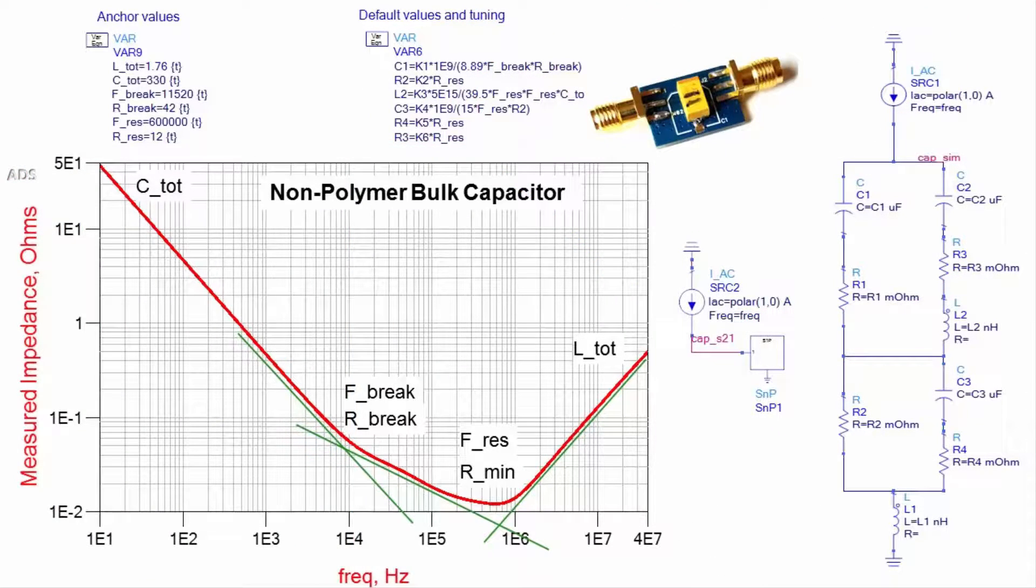Non-polymer bulk capacitors exhibit frequency-dependent resistance and capacitance, requiring a more sophisticated model. Again, anchor points extracted from the measurement provide a good starting point.